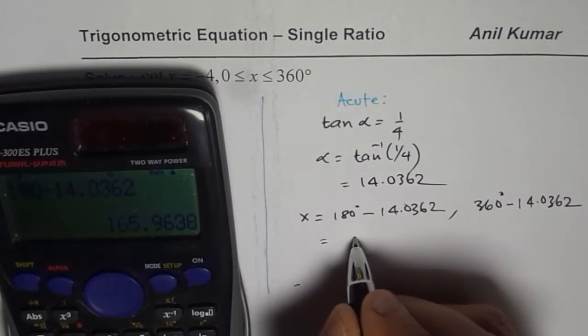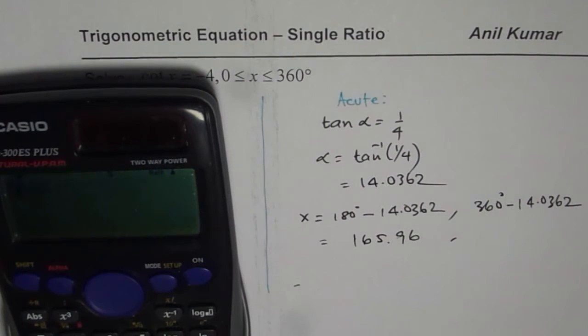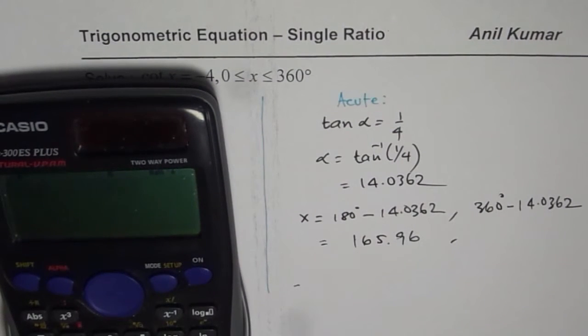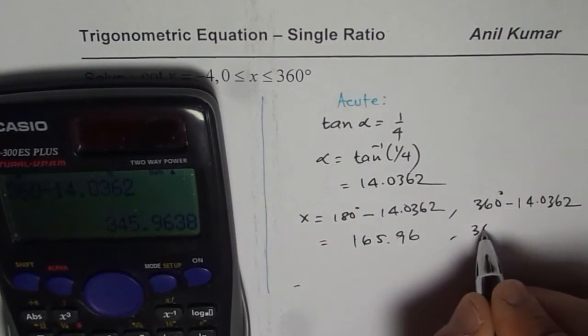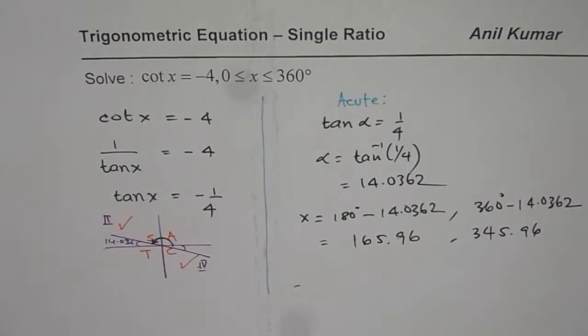so one answer is 165.96. The other one is 360 minus 14.0362 equals to 345.96. So that is how we can get these answers.